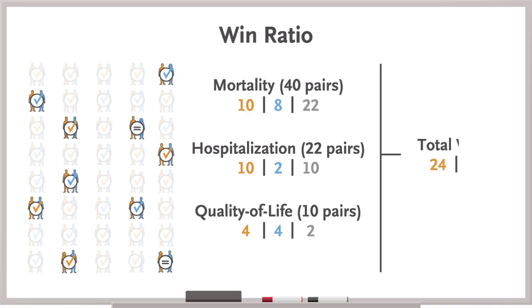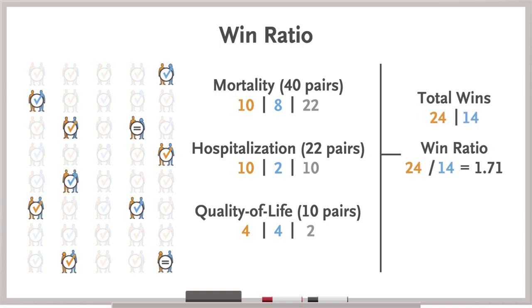Then you add it all up. The win-ratio is a ratio of the wins and the losses. In this case, 24 over 14, or 1.71, which favors the new medication.